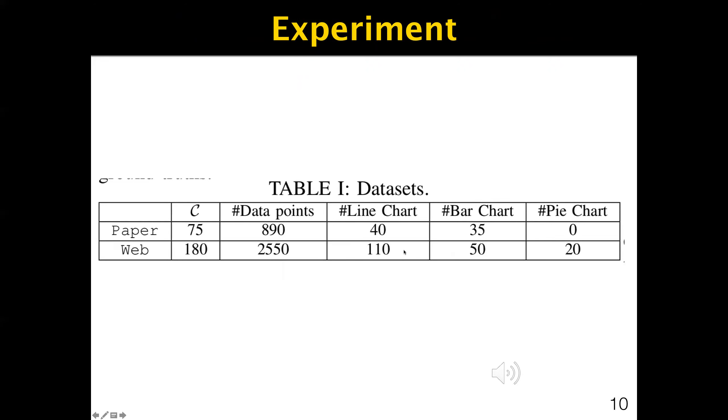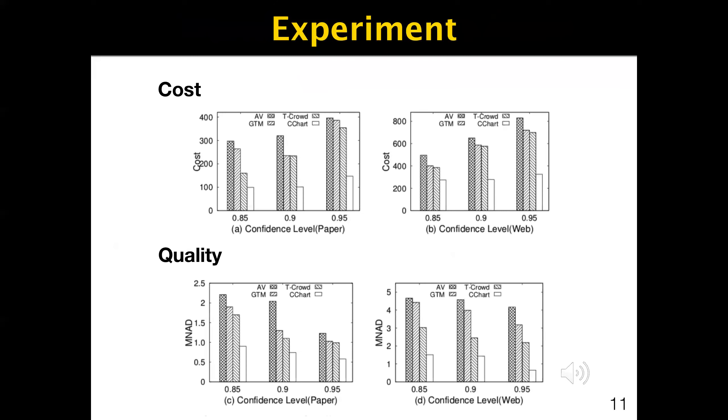And here are the experiments. We use two real datasets and use Amazon Mechanical Turk as our crowdsourcing platform. We can see that for cost, CrowdChart saves more than two times the cost compared with other state-of-the-art works by achieving the same confidence level. This is because we can stop early to save cost. For quality, our method also outperforms the baseline significantly. The significant improvement of CrowdChart is attributed to the truth inference techniques such as answer alignment and the worker model.